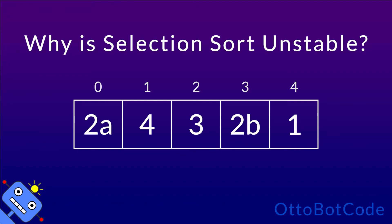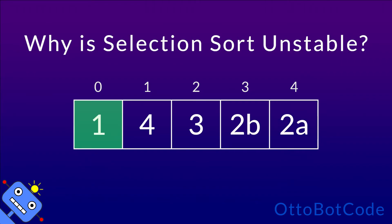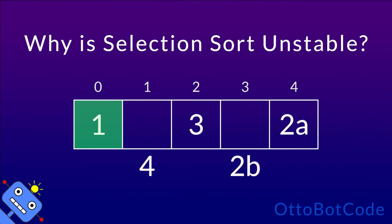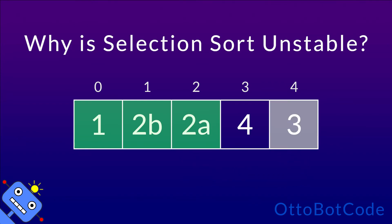In the first step, the minimum element is 1, so 2a is swapped with 1 — but this is very bad. Now 2a is suddenly to the right of 2b. In the second step, selection sort picks 2b as the minimum element and swaps it with 4. Next, 2a is picked and swapped with 3. As you can see, the relative order between 2a and 2b is not preserved.